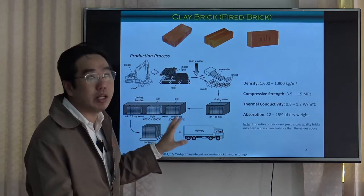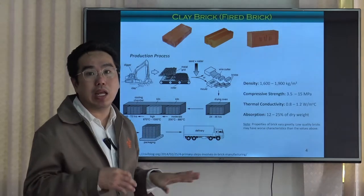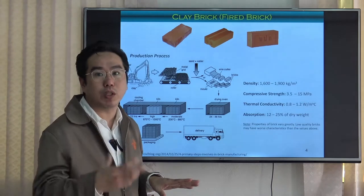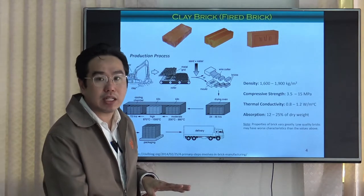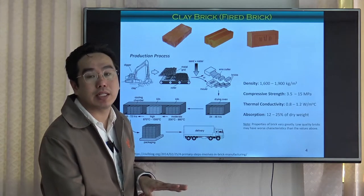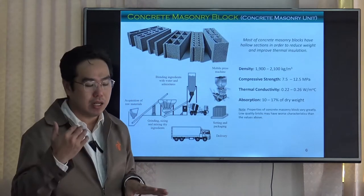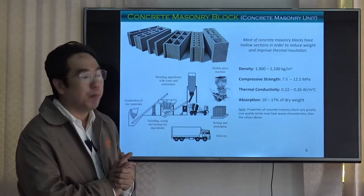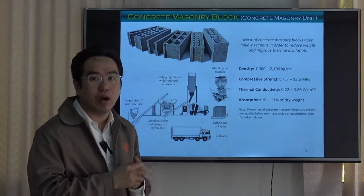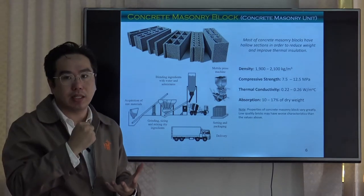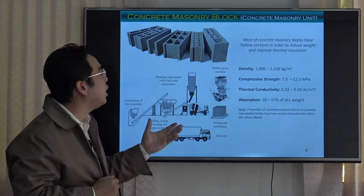The clay brick has been popular in the last century, before we had more and more cement products made from modern Portland cement. In the last five or six decades in Thailand, we have had a type of product made from Portland cement mixed with aggregate, put into blocks and then compressed. This type of block is called the concrete masonry block.